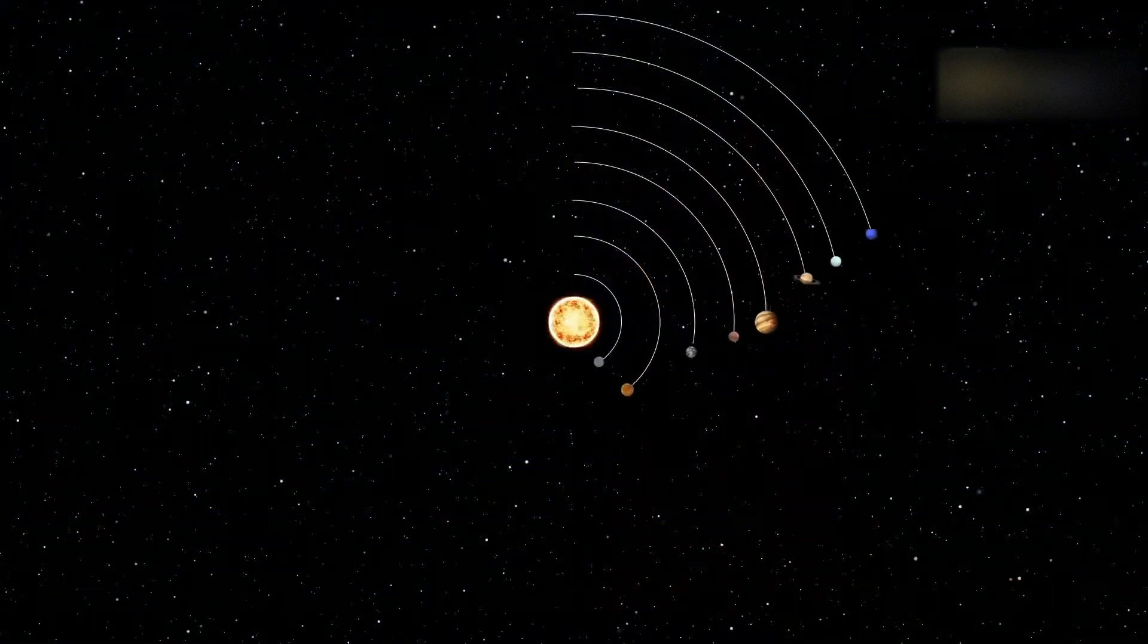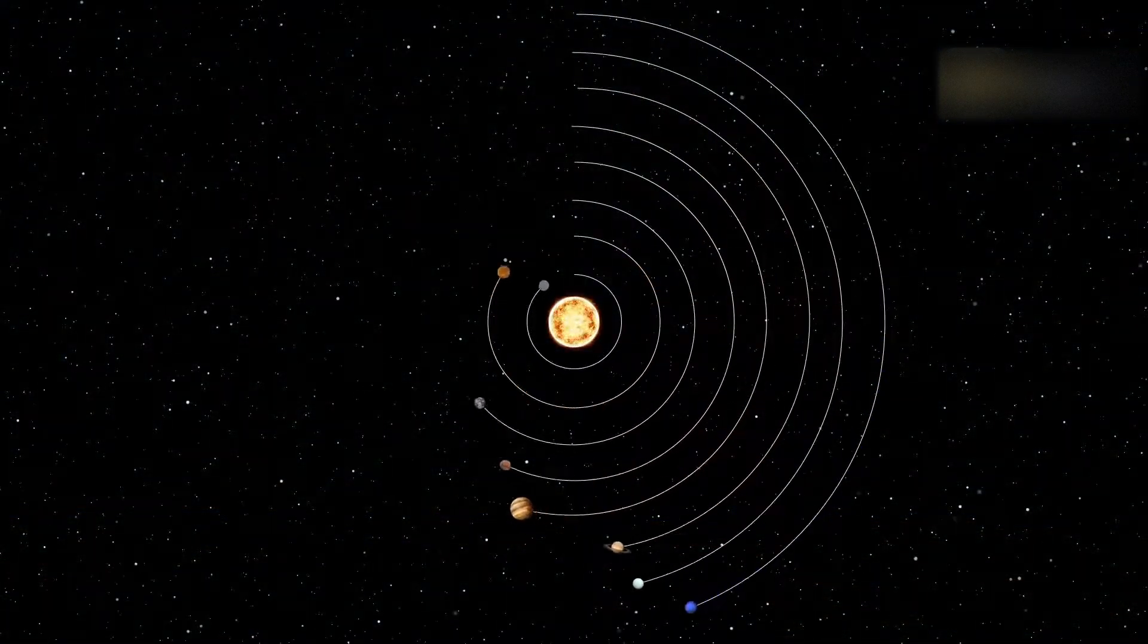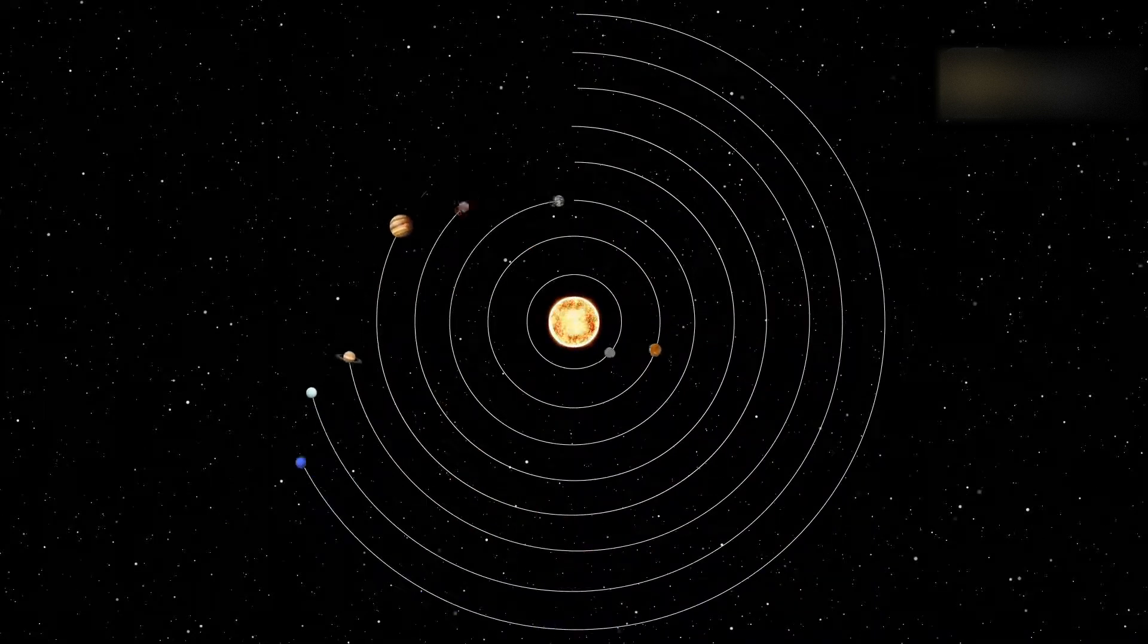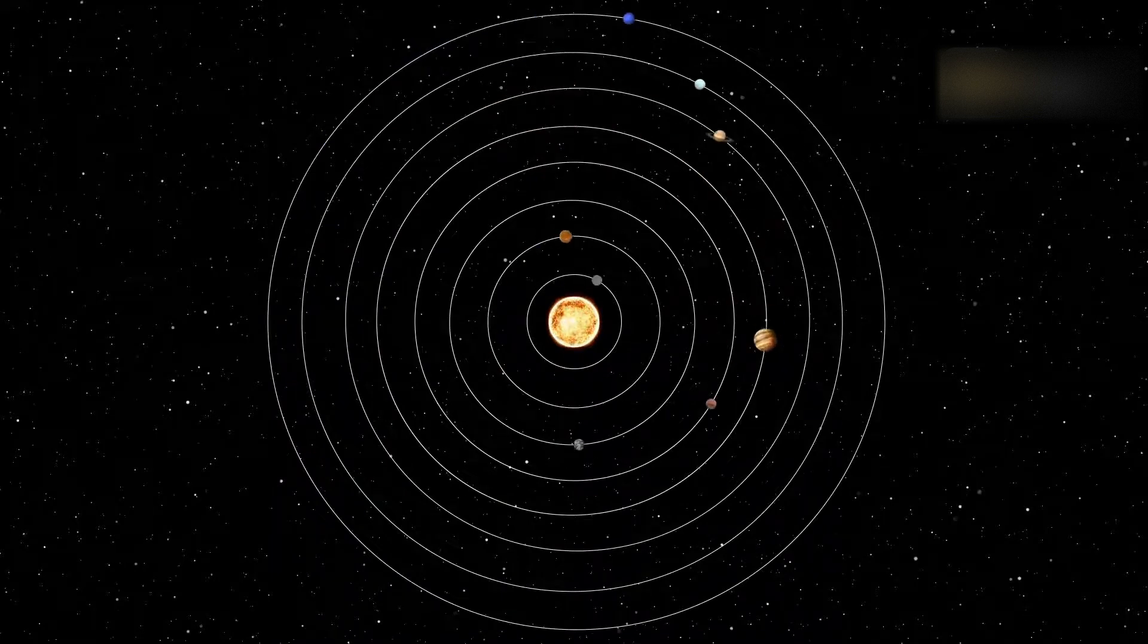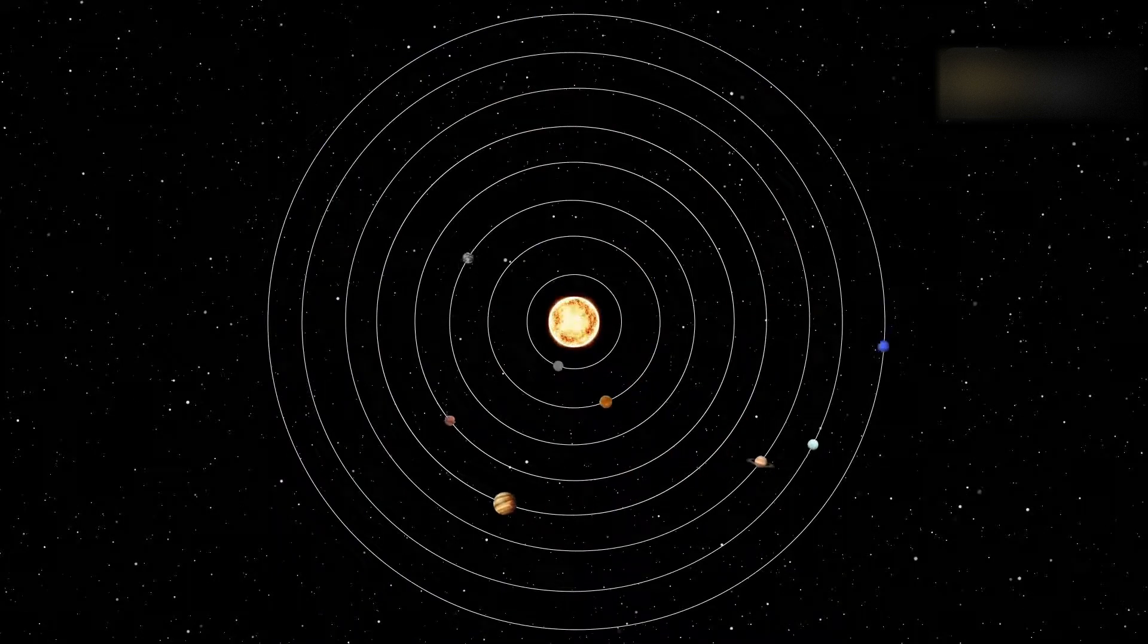Under clear skies, you should be able to spot Venus, Jupiter, and Saturn. Mercury will be closer to the horizon, but still bright enough to be seen by most observers.